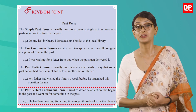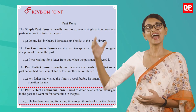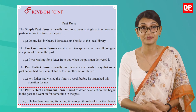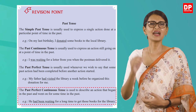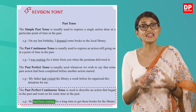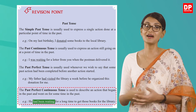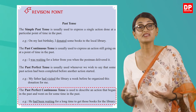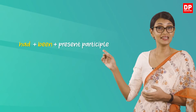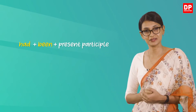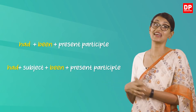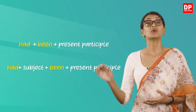The example given in your pupils book is: 'He had been waiting for a long time to get those books for the library.' As you can see, the fact that he had been waiting for a long time suggests it was an action that went on for some time in the past. The past perfect continuous is formed using had + been + present participle. Questions are formed by inverting the subject and 'had'; negatives are made with 'not'.